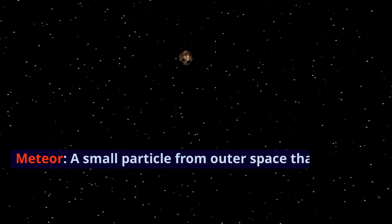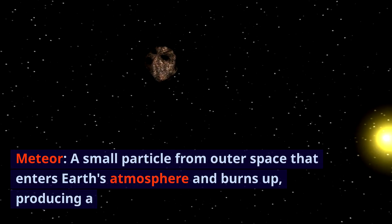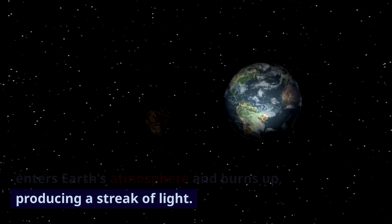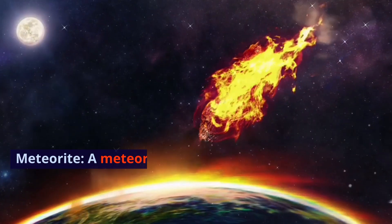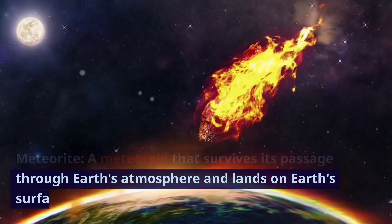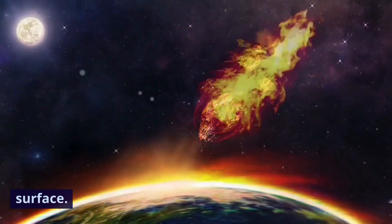Meteor. A small particle from outer space that enters Earth's atmosphere and burns up, producing a streak of light. Meteorite. A meteoroid that survives its passage through Earth's atmosphere and lands on Earth's surface.